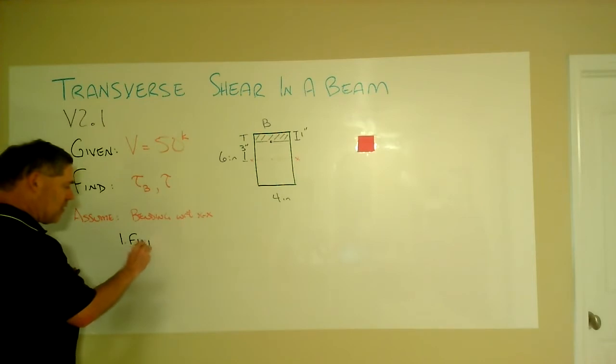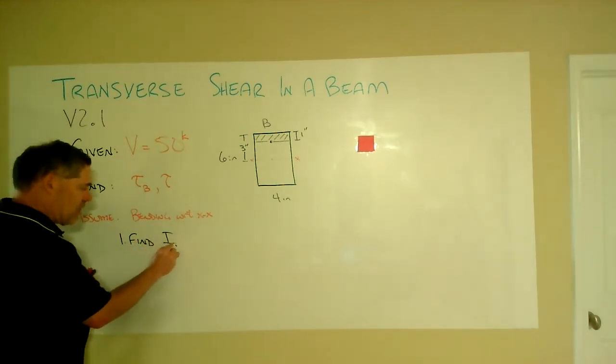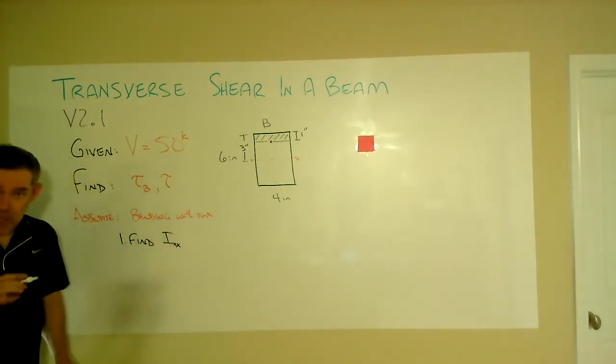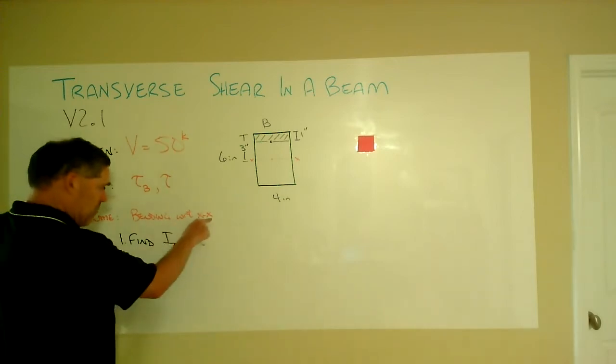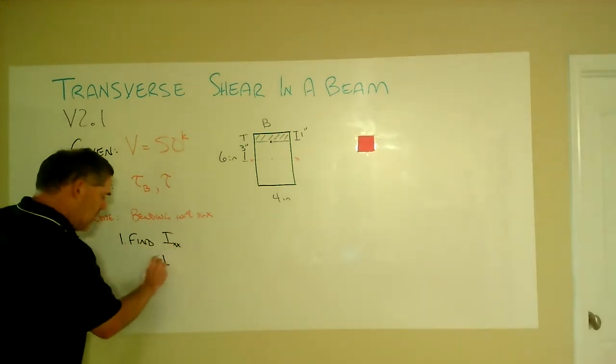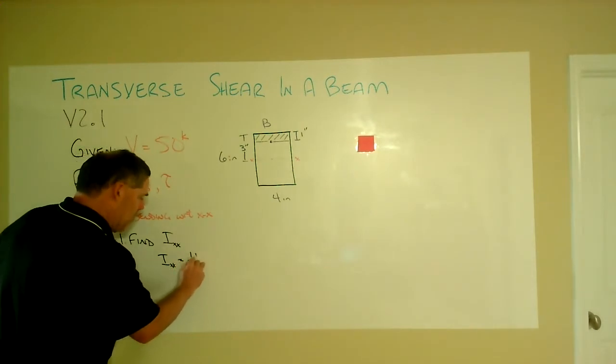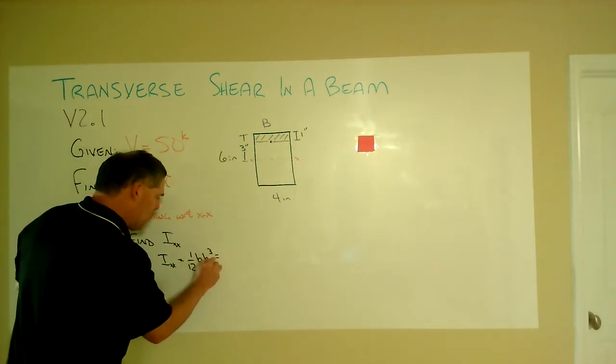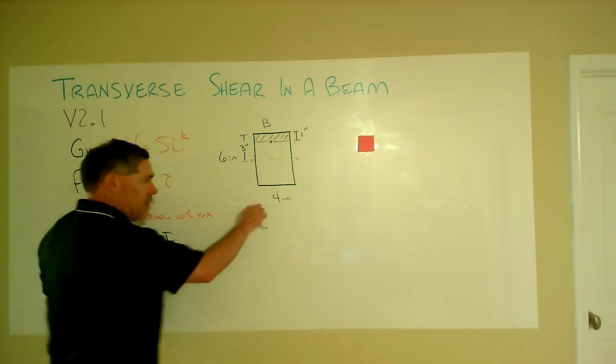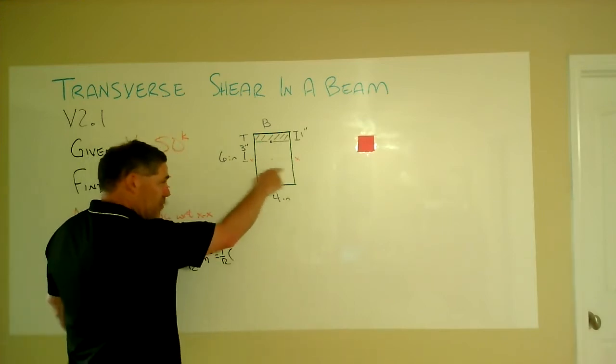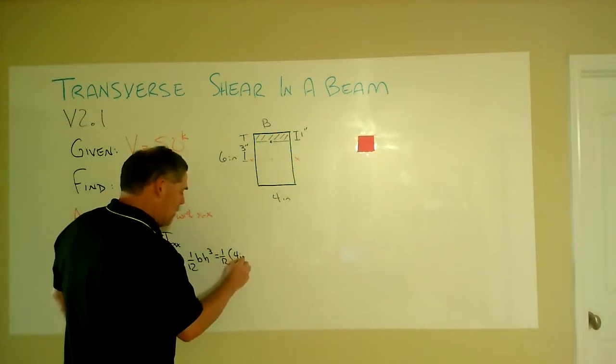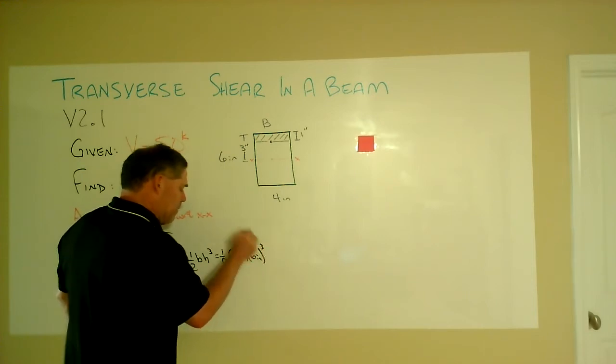Let's first find our second moment of area. That would be, again, with respect to the XX axis by assumption. And so I_XX would be equal, it's a rectangle here, so one-twelfth of the base times the height cubed. That's one-twelfth of the base here that's parallel to our axis, that's four inches, times the height of six inches cubed.